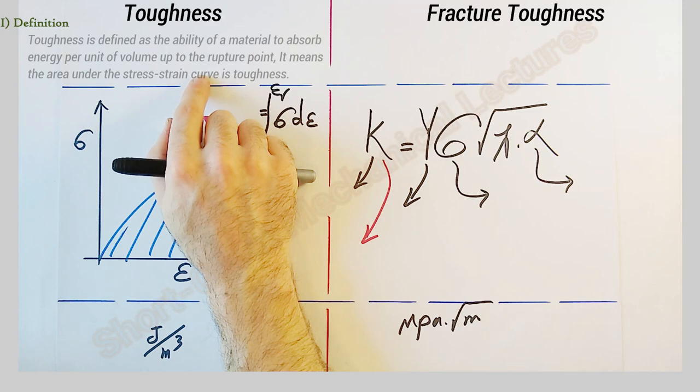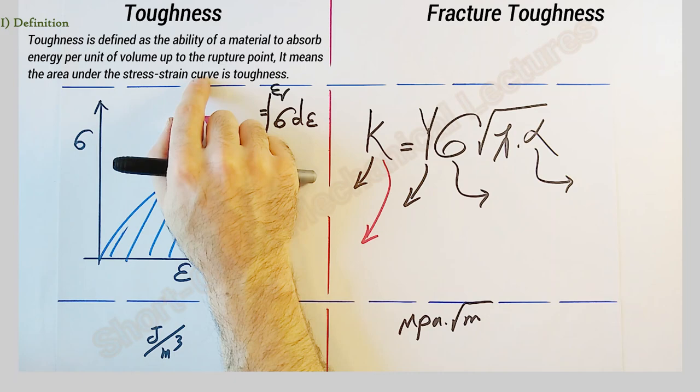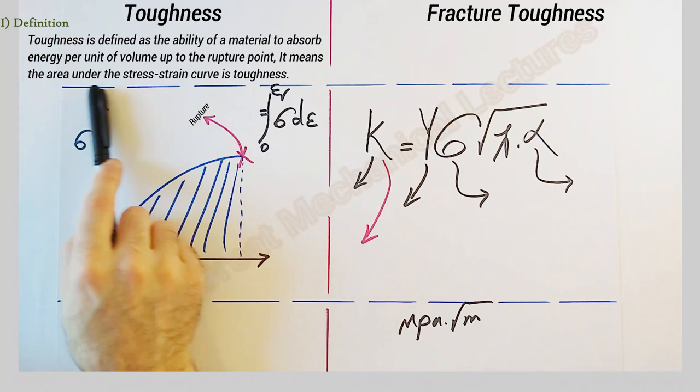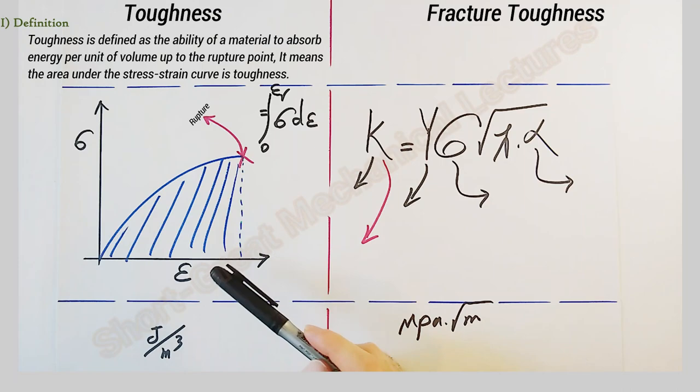The definition of toughness is this. Toughness is defined as the ability of a material to absorb energy per unit of volume up to the rupture point. It means the area under the stress-strain curve is toughness.